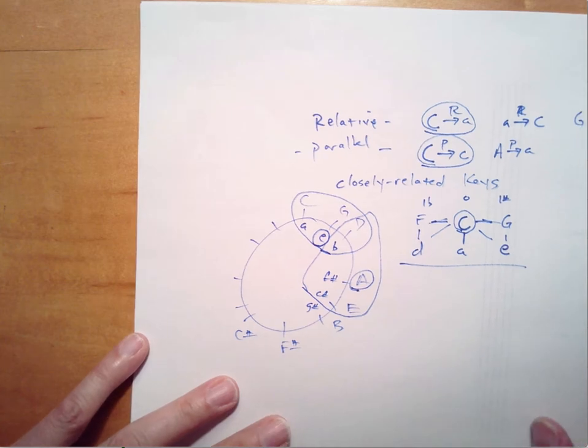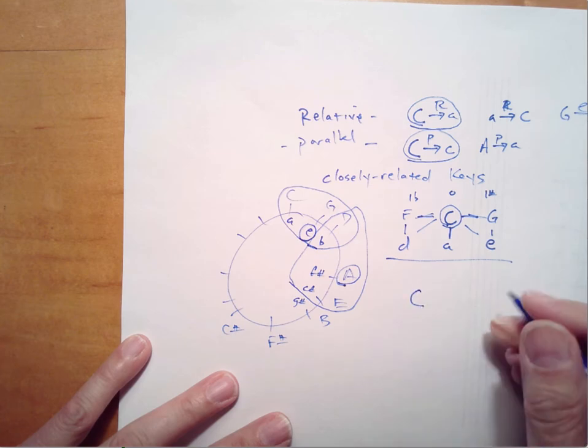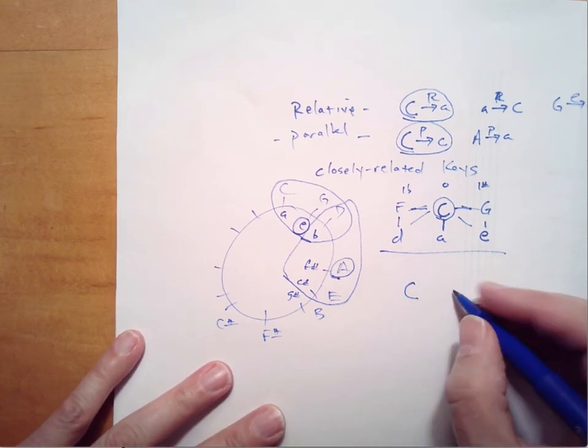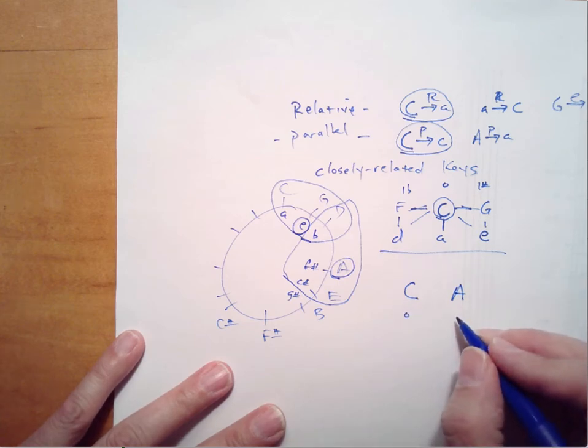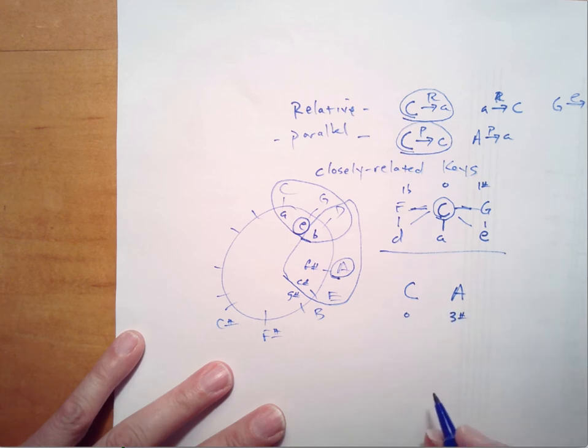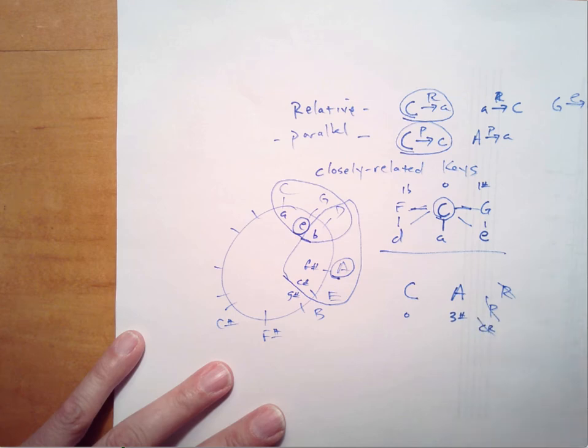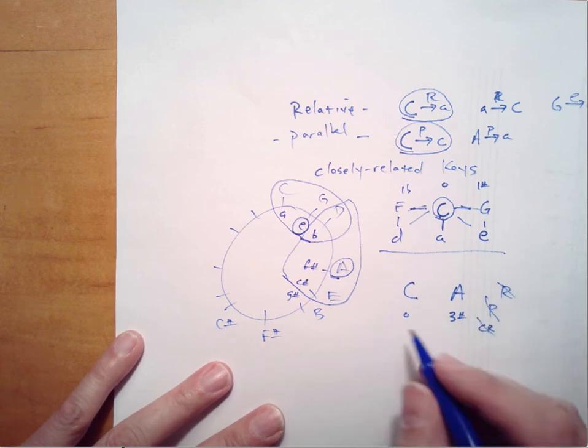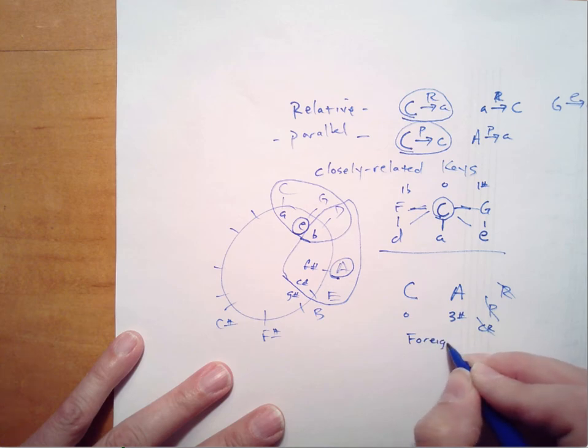Now, if we wanted to relate, for example, the key of C major and A major, that's zero and three sharps. Okay, that's not relative. It's not parallel. It's not closely related. We say that this is a foreign key relationship.